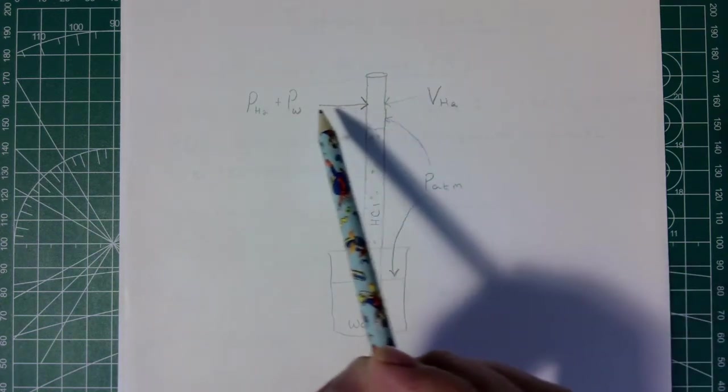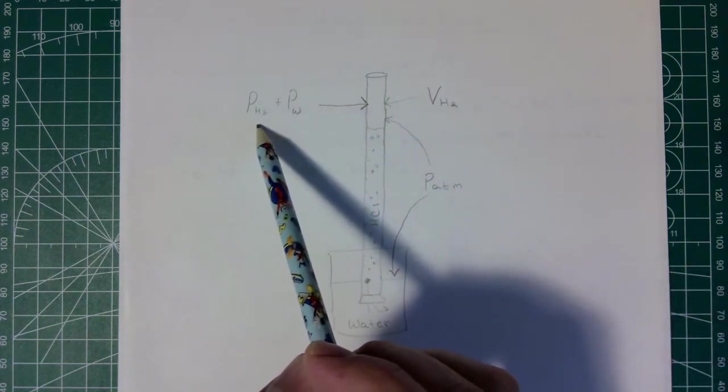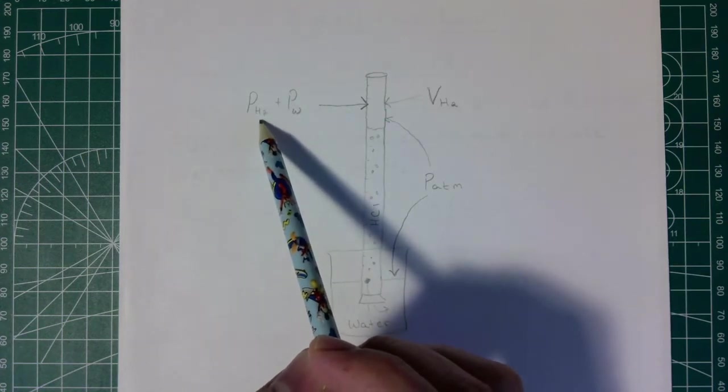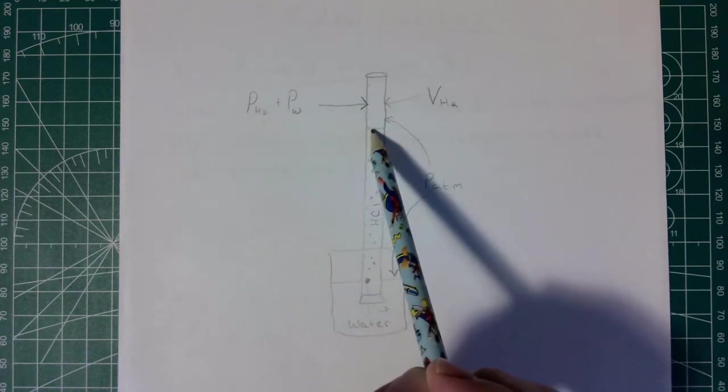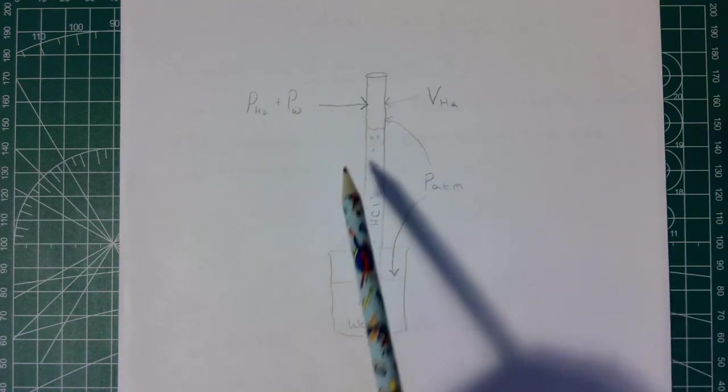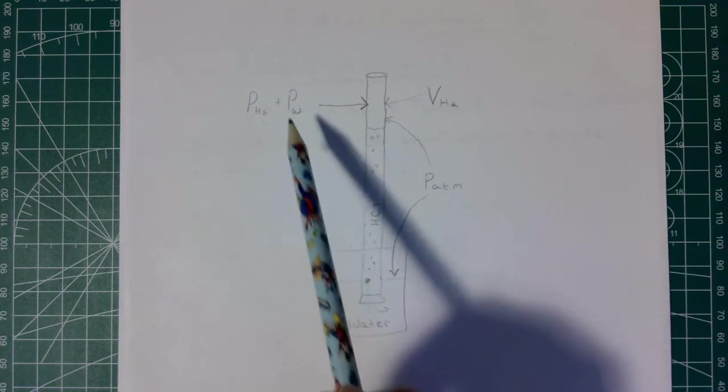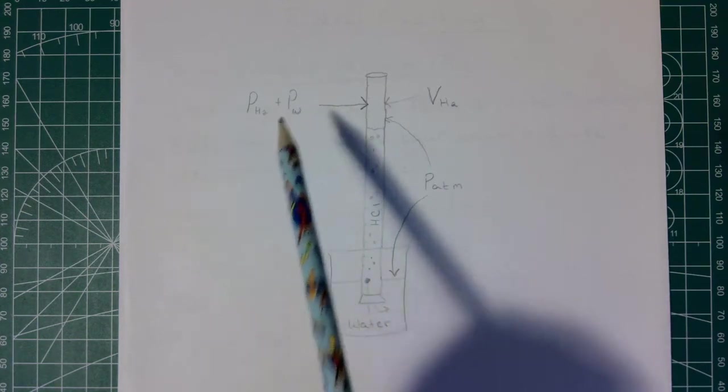We're going to know that this atmospheric pressure, due to Dalton's law, is partially going to be the hydrogen that we produce, and then a small amount of it will be the pressure due to water vapor pressure coming up off of this water here, so we're going to make a little correction for that.